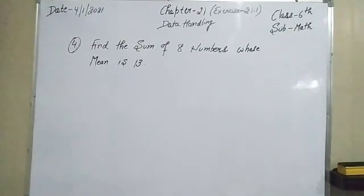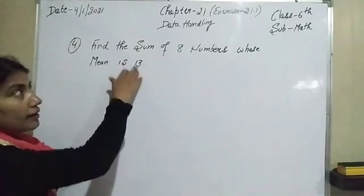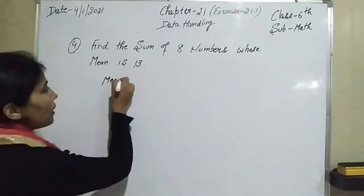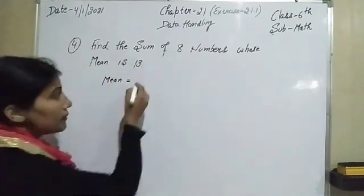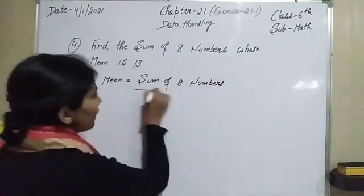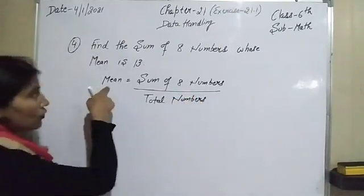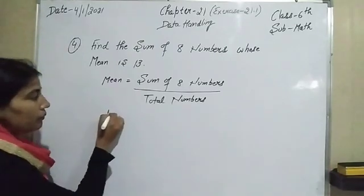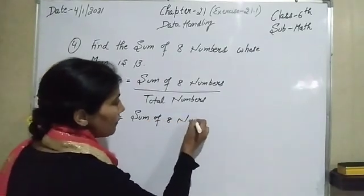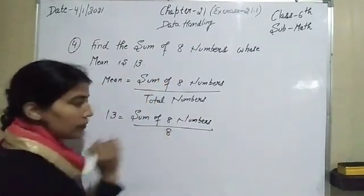The next question: find the sum of 8 numbers whose mean is 13. In this question the mean is already given and we have to calculate the sum. Using the same formula: mean equals sum of observations divided by total numbers. So the mean is 13, we need to find the sum of 8 numbers, and the total number of observations is 8.